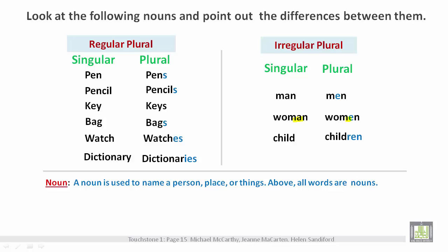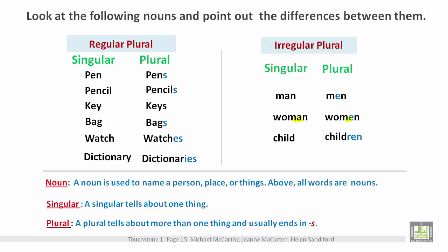A noun is used to name a person, place, or thing. Above all, these words are nouns. A singular noun tells about one thing. A plural noun tells about more than one thing and usually ends in S.